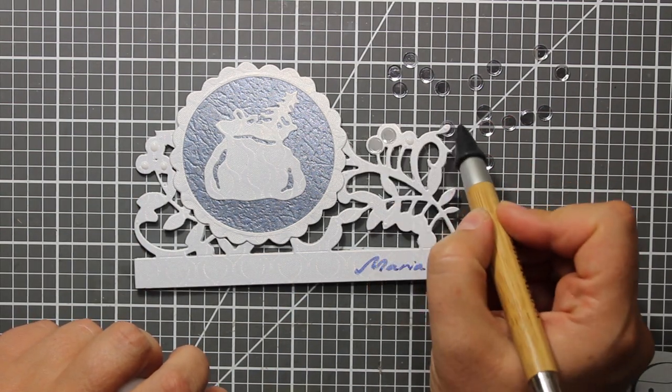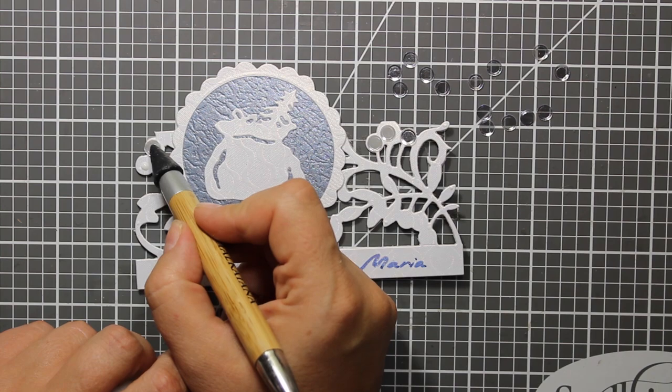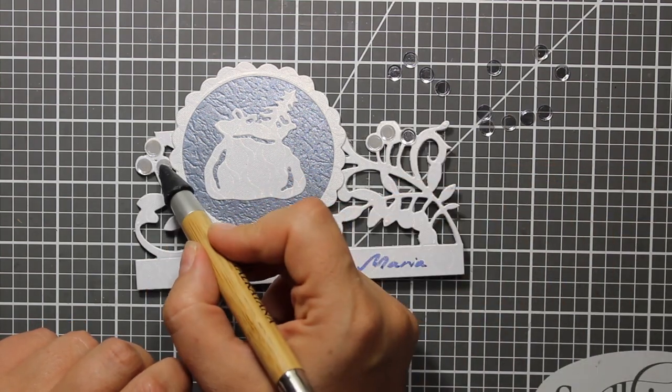To embellish the card I'm going to use some silver confetti sequins. I'm sticking them to the berries on the pattern.